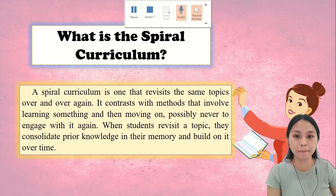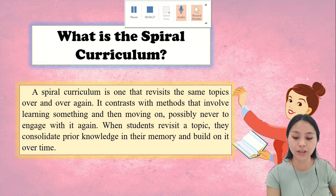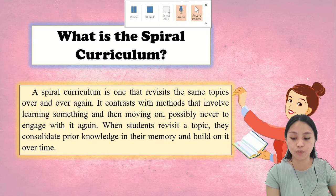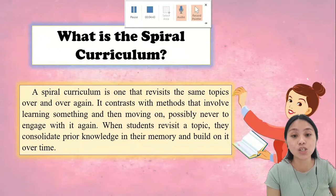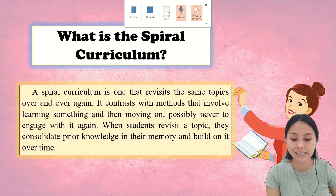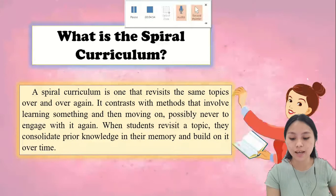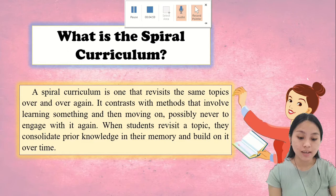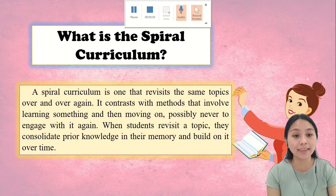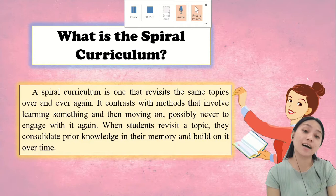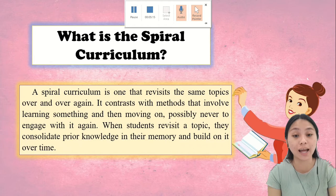Students will not understand the concept if teachers plan to teach it using only the teacher's level of understanding. Instructions need to be anchored on the learner's cognitive capabilities. The instructor should present material in a format appropriate to the learner's current state of understanding. Curriculum should be organized in a spiral manner so that students continually build upon what they have already learned. Spiral curriculum has the advantage of reinforcing information over time and using prior knowledge to guide future learning.